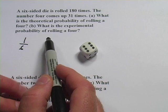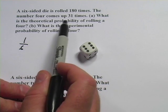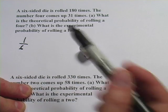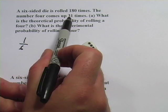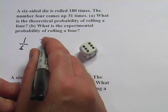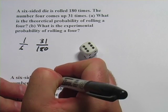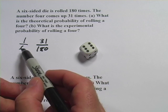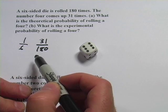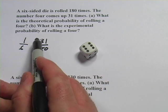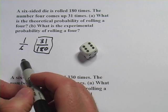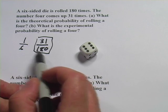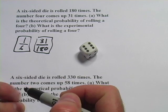The experimental probability we can get just from looking at the results that came up. It's not exactly one in six. What it says here is the four came up 31 times out of 180. Now if you were to divide 31 by 180, you'd find it's really close to one in six, but not exactly. We call this the experimental probability, what actually came up, and this the theoretical probability.